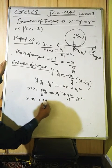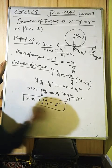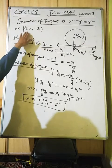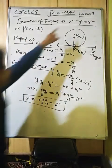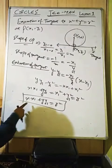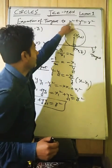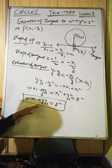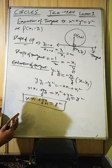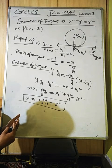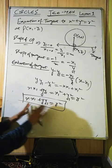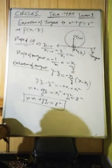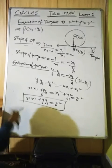Since P(x₁,y₁) lies on the circle, x₁² + y₁² = r². Therefore the equation of tangent at P(x₁,y₁) is: x·x₁ + y·y₁ = r². The rule is: replace x² with x·x₁ and y² with y·y₁. This same pattern follows for parabola, ellipse, and hyperbola.